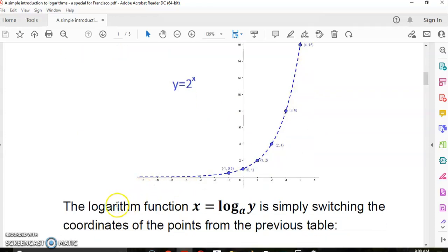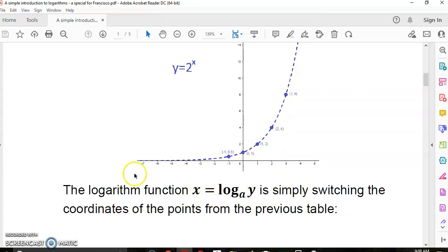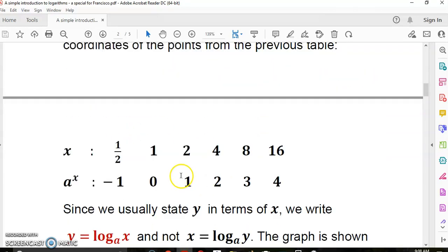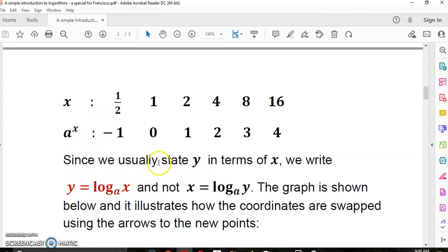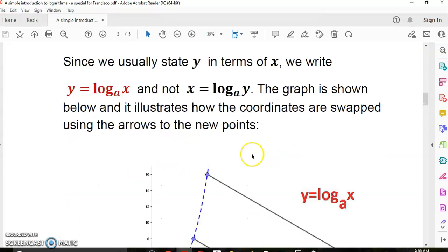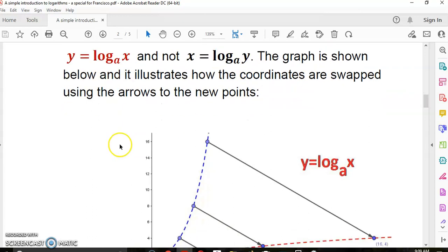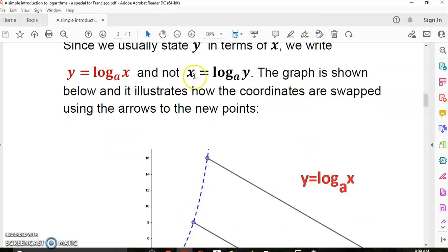The logarithmic function is simply switching the coordinates of the points from the previous table. Since we usually state y in terms of x, we write y is equal to log of x to base a, and not x is equal to log of y to base a. The graph is shown below. It's a little confusing the way this is done, but that's the tradition or the custom.